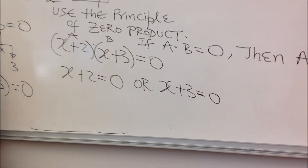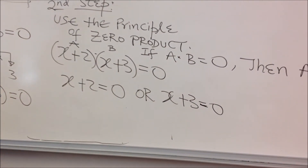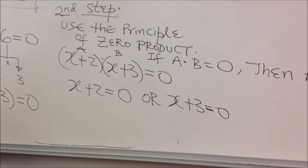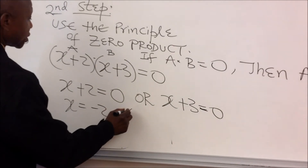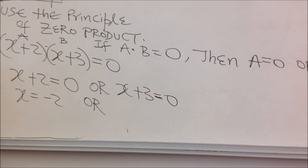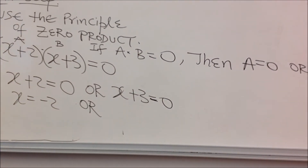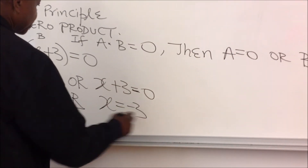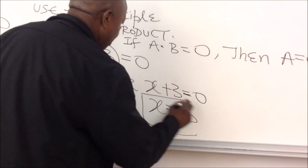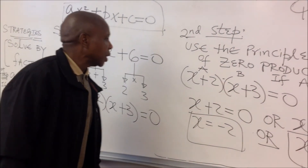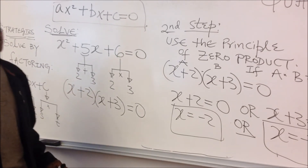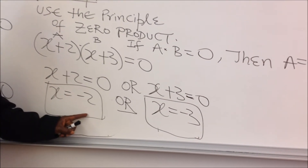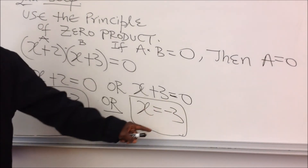If x plus 2 equals 0, then x equals negative 2. And if x plus 3 equals 0, then x equals negative 3. So given x squared plus 5x plus 6 equals 0, using the factoring method, our solution is x equals negative 2 or x equals negative 3.